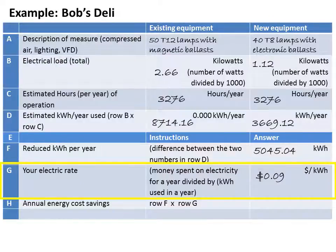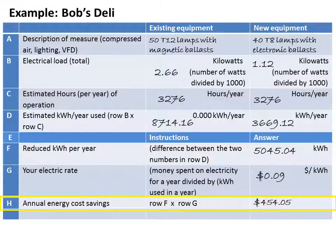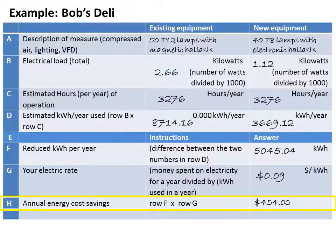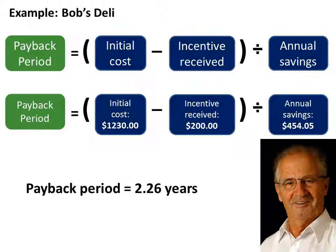Bob enters 9 cents per kilowatt hour as the electric rate on his annual savings worksheet. Now Bob multiplies the number of kilowatt hours he reduced per year in row F by his electric rate in row G. In Bob's case, this is 5,045.04 kilowatt hours times 9 cents, which equals savings of $454.05 every year. Then Bob plugs the numbers he's calculated into the payback period formula. Bob subtracts the incentive he will receive from the Act on Energy program from the initial cost of the project. Then he divides this number by the annual savings he calculated, and he sees that the payback period for his lighting project is 2.26 years.